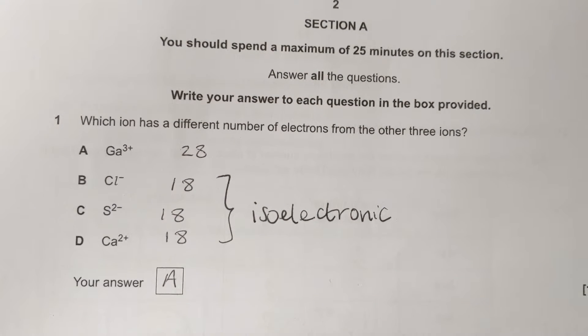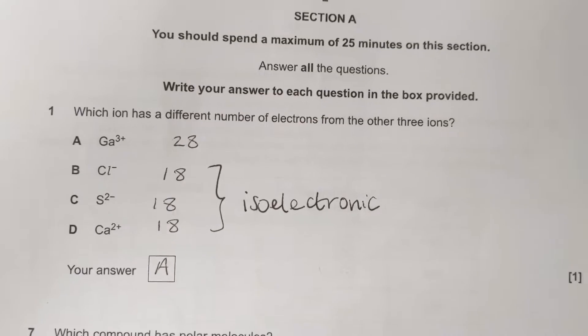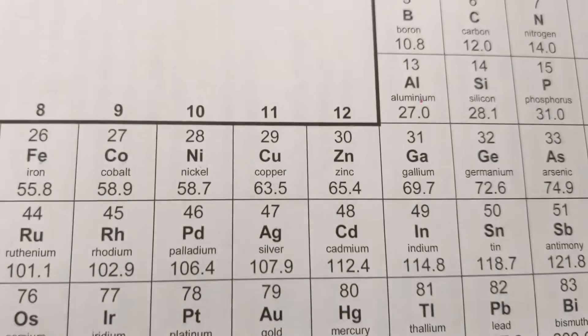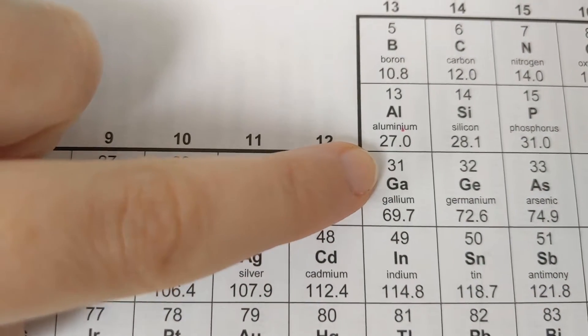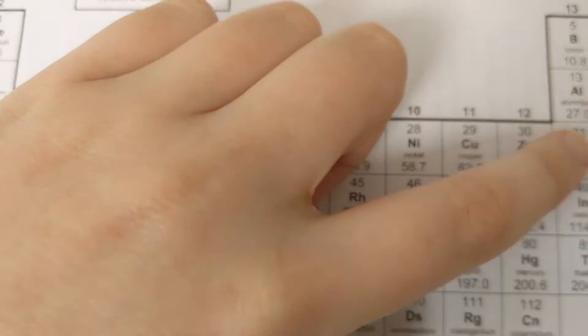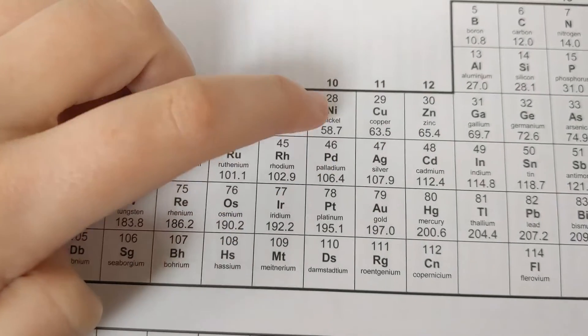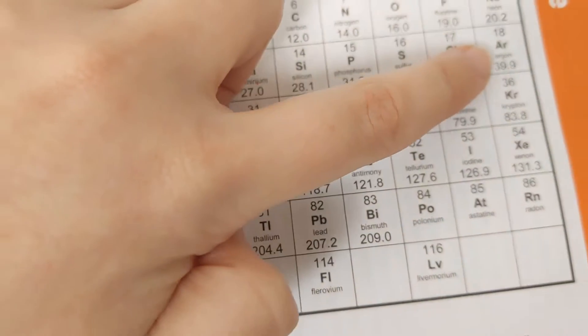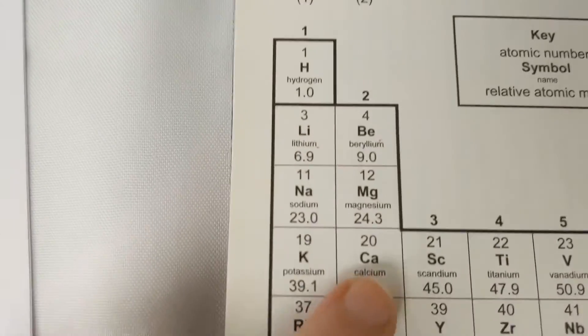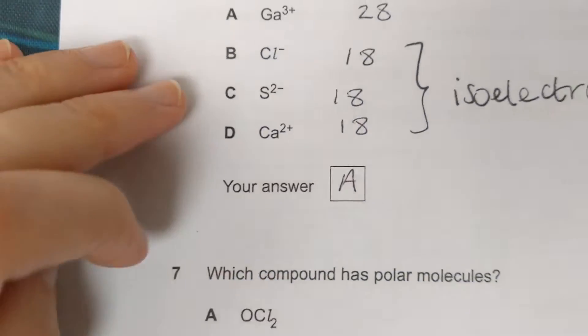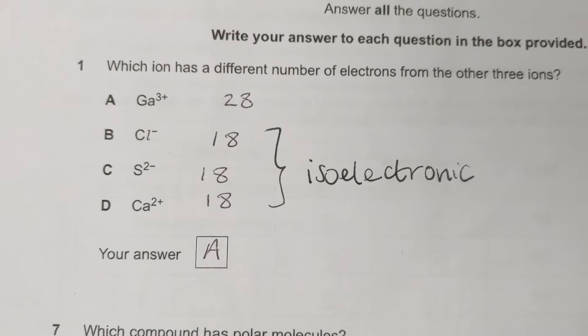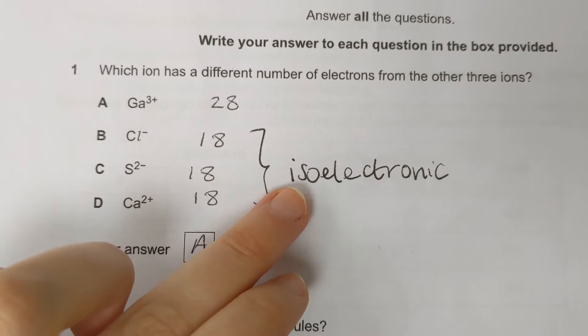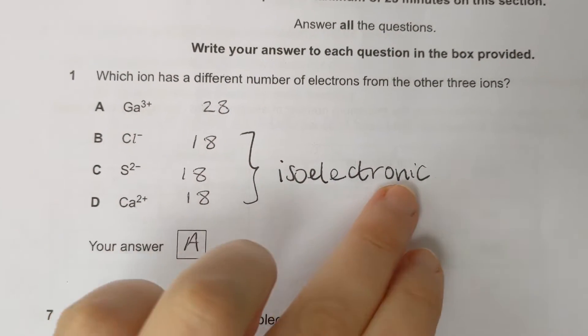So question one: which ion has a different number of electrons from the other three ions? To do that we need a periodic table and we can look at the little number which tells us the number of electrons. Gallium 3+ will count three backwards, so 1, 2, 3, and it's going to have 28 electrons like nickel. We do the same with the rest. Chloride Cl- will have 17 plus 1, so 18 electrons. S2- also has 18 electrons. Calcium 2+ has lost two electrons, so that also has 18. So the correct answer is A. These other three all have 18 electrons and they're called isoelectronic—iso means same, electronic is to do with electrons, same number of electrons.